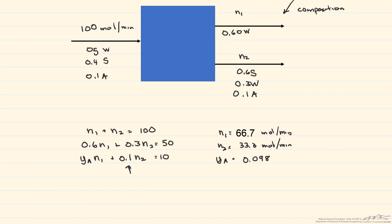If instead we use a basis of 50 moles per minute, these numbers will change. So it'll be exactly half. So this'll be 50, this'll be 25, and this will be 5. And when we solve for these, we're gonna find that they're going to be half of what they were. So this is approximately 33.3 moles per minute and this is going to be about 16.6, and these are both in moles per minute. And when we solve for y sub a, we still get 0.098.